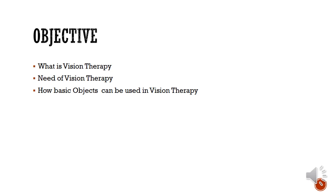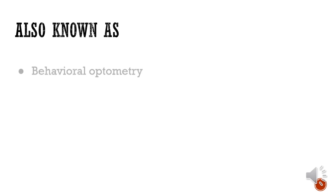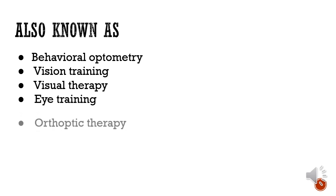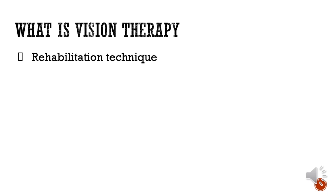Vision therapy has several other names: it is also called behavioral therapy, vision training, visual therapy, eye training, and orthoptic therapy. When we say the term vision therapy, it is actually a therapy which implies rehabilitation techniques. When we say rehabilitation, it is basically taking whatever ability you have and making it more enhanced or working in a better way.